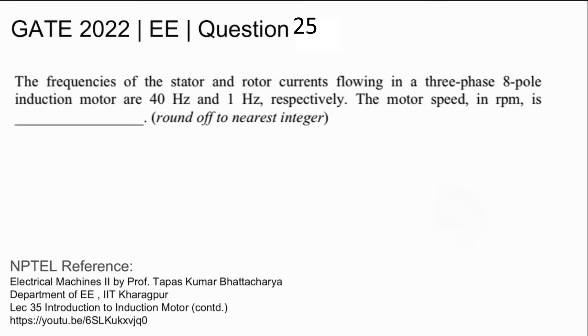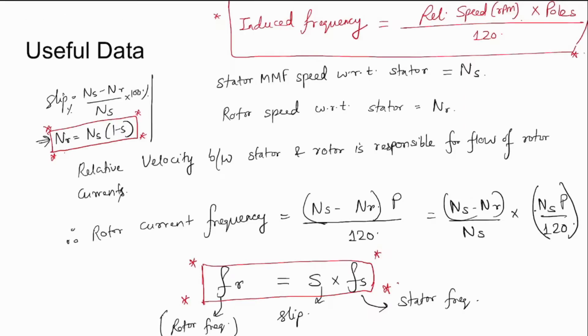For useful data: if the stator MMF with respect to stator has Ns rpm and the rotor speed with respect to the stator is Nr, then the relative velocity between the stator MMF and the rotor is Ns minus Nr.